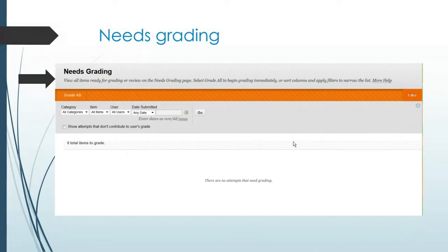I talked a little bit about Needs Grading — this is the screen that will show up. If you had anything to grade, it would list it all. I have courses where modules have a quiz, a paper, or a test, and they'll all be labeled together. You can create a way to look and find a particular item. When I grade for an online course, I can read all my papers at one time or grade all the tests at one time — that's the nice thing about Needs Grading.